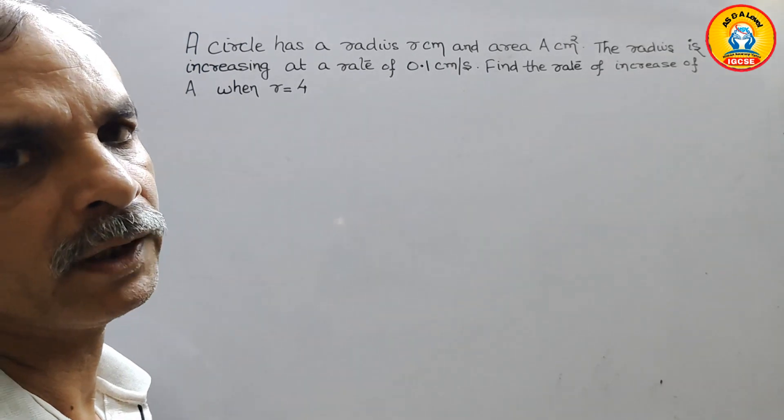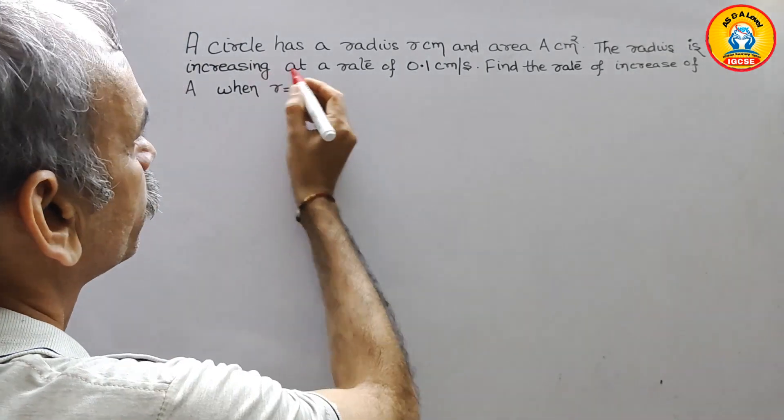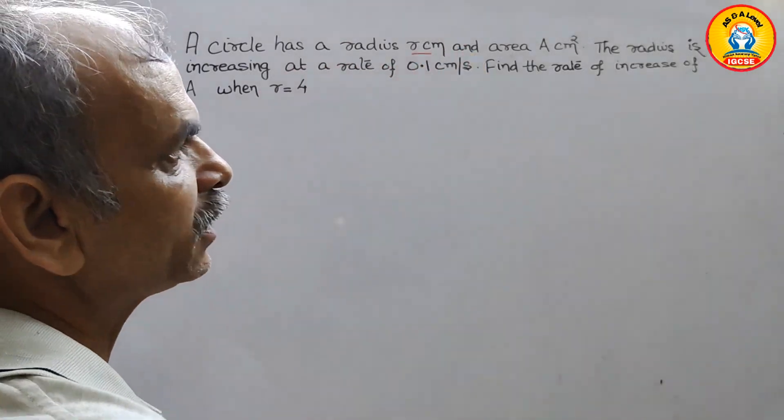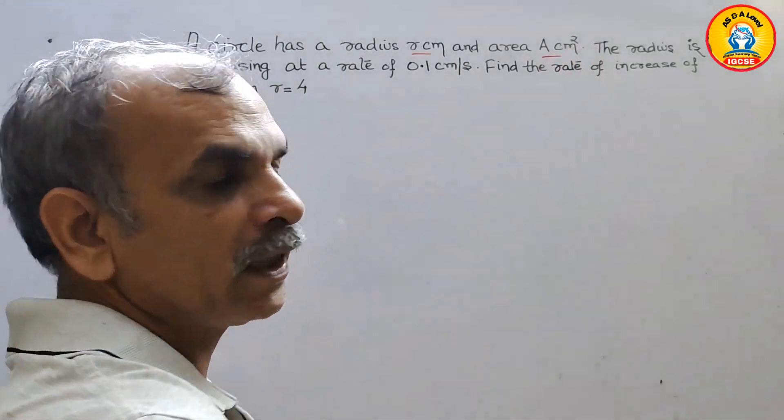See what they have given. Here they have told radius is r centimeter and the area is A centimeter square.